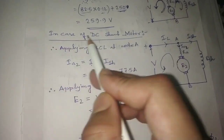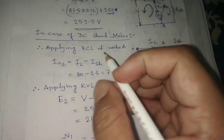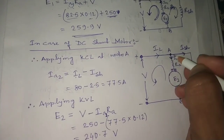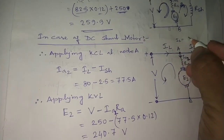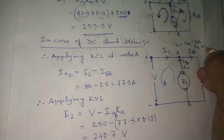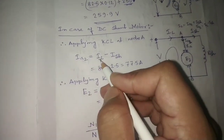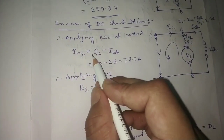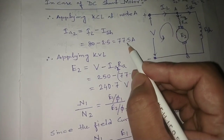Now for the DC shunt motor case, we draw the circuit diagram and apply KCL at the node. The incoming current is IL, and the outgoing currents are Ish and Ia2. So IL equals Ia2 plus Ish, which gives Ia2 equals IL minus Ish. Substituting: 80 minus 2.5 equals 77.5 amperes.